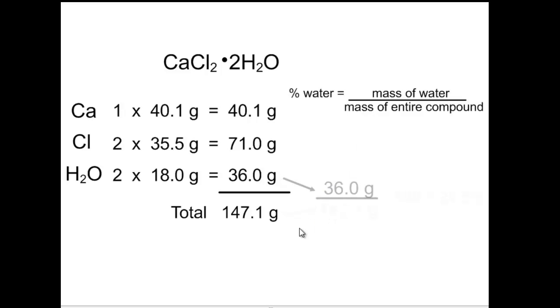So the mass of the water is 36, the mass of the entire compound is 147, and when you divide the 2 and multiply it by 100, you get 24.5%. So now we know this compound's made up 24.5% of water,